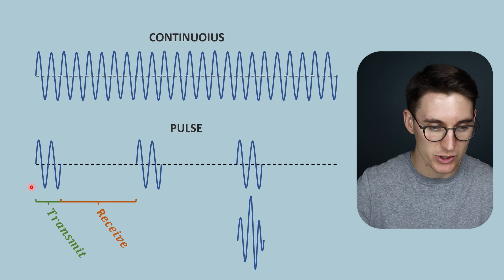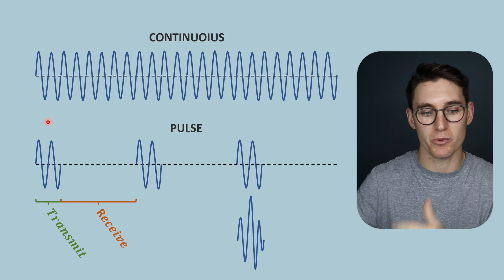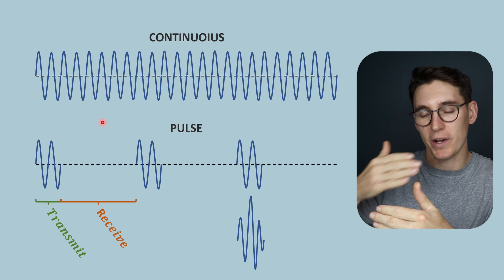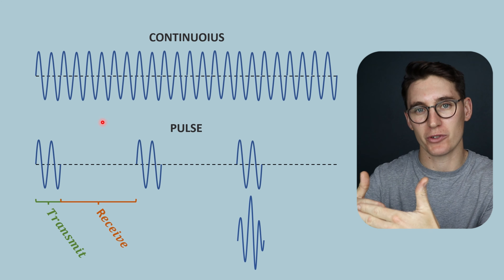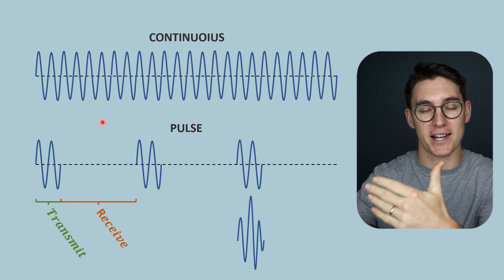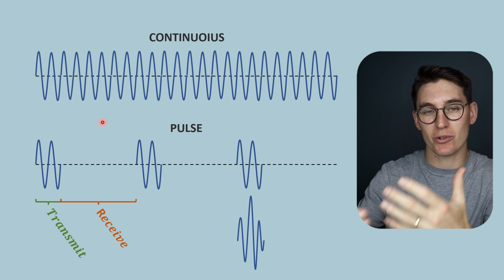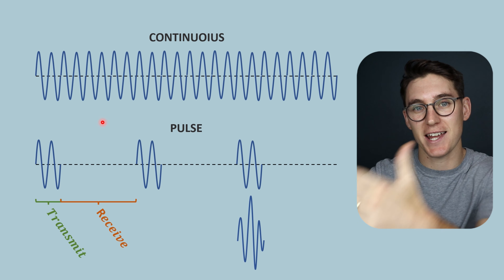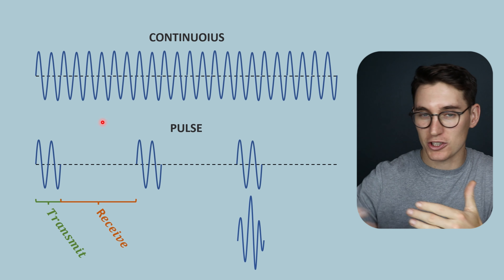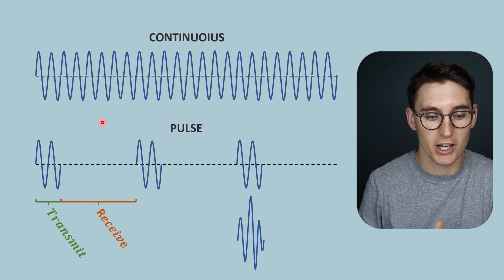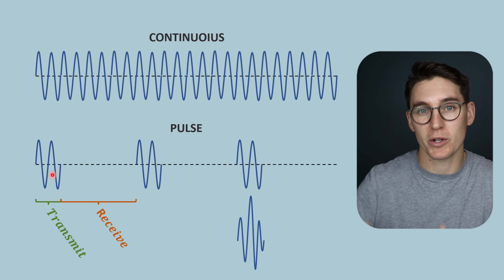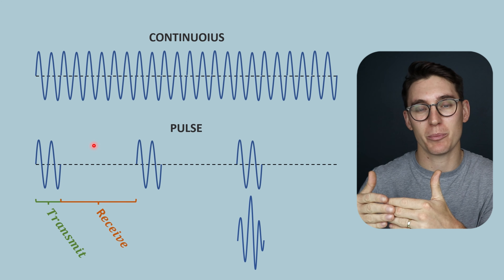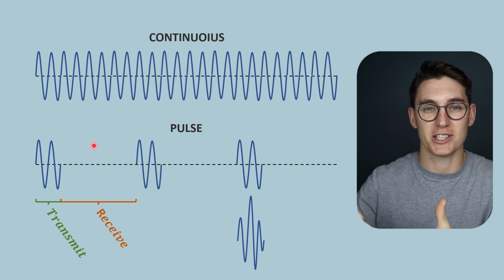Pulse echo allows us to send a short pulse of ultrasound into a tissue and then wait in what is known as the receive time. That pulse goes into the tissue and when it comes into contact with tissue boundaries, some of it will be reflected back towards the ultrasound transducer. Some of the pulse will pass through that barrier until it reaches the next tissue boundary. So we have a transmit time — when we are generating a pulse — and a receive time, when the machine is listening for echoes coming back off the tissue boundaries.